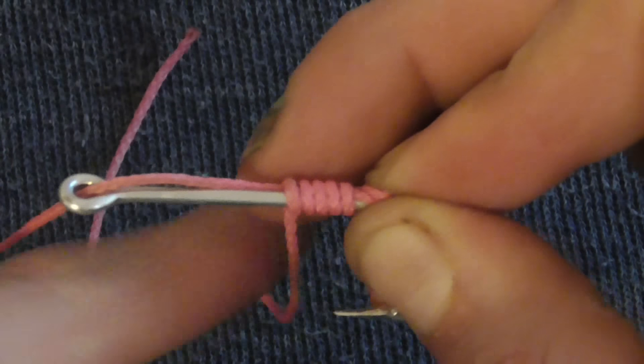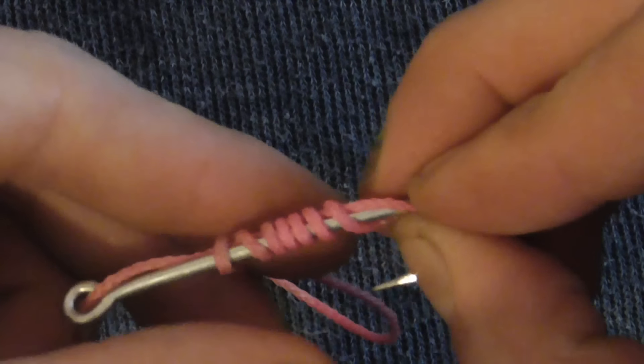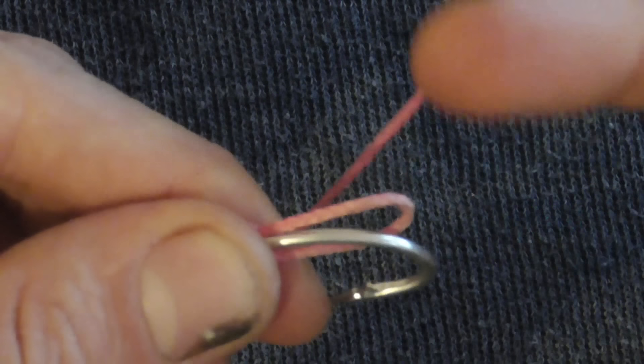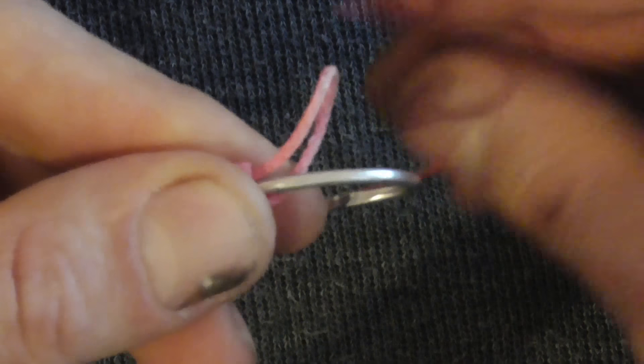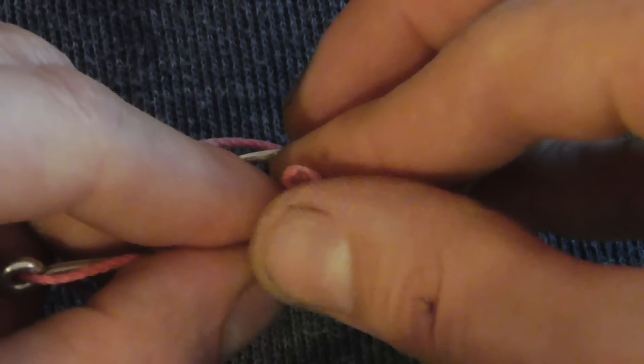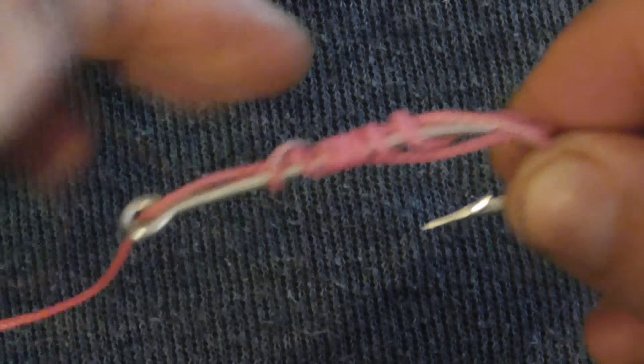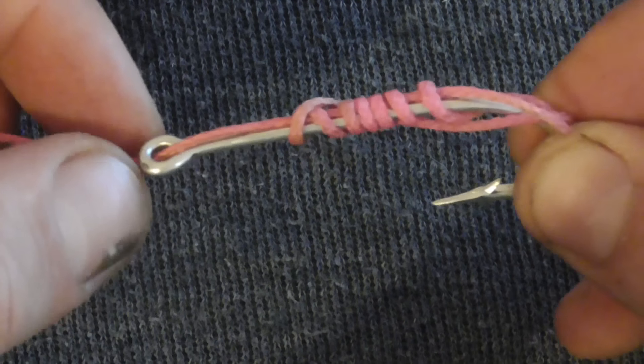Six to eight turns is good and then all you need to do is take this tag end and feed it back through that loop. Then you can just pull the tag end and this standing part after you've lubricated the line.